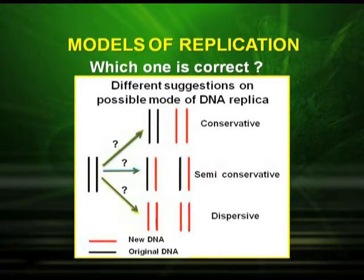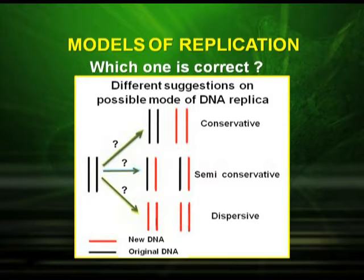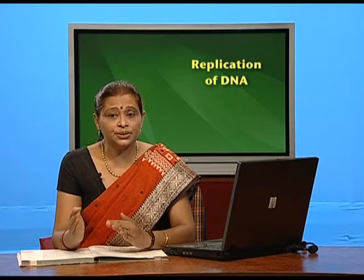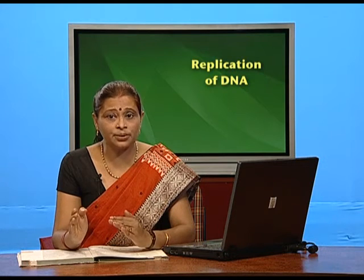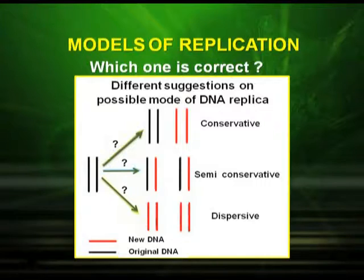As you can clearly see in the picture, conservative means both strands of the DNA were conserved — they were saved and new strands were produced. In semi-conservative, out of the two strands, one strand is the parental one on which a new strand appears. So the new strands formed are half old and half new, which is why it is called semi-conservative. In dispersive, there is intermingling of old and new strands.